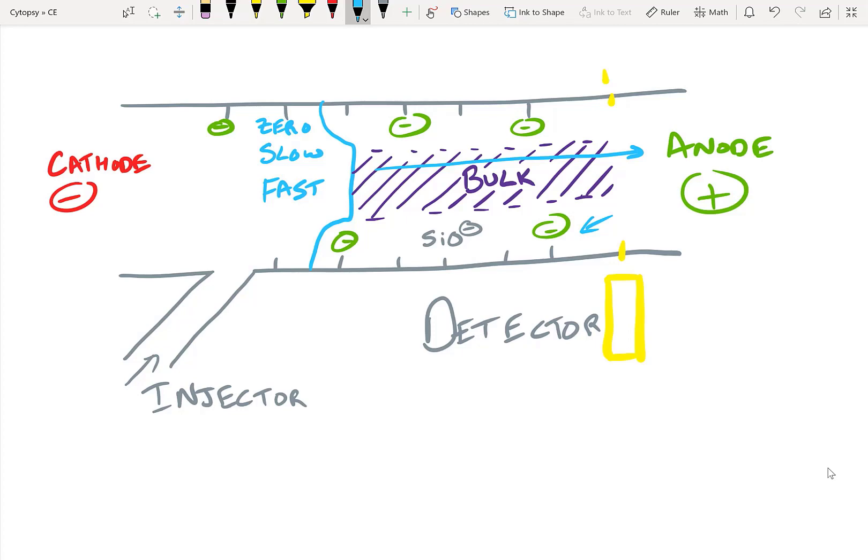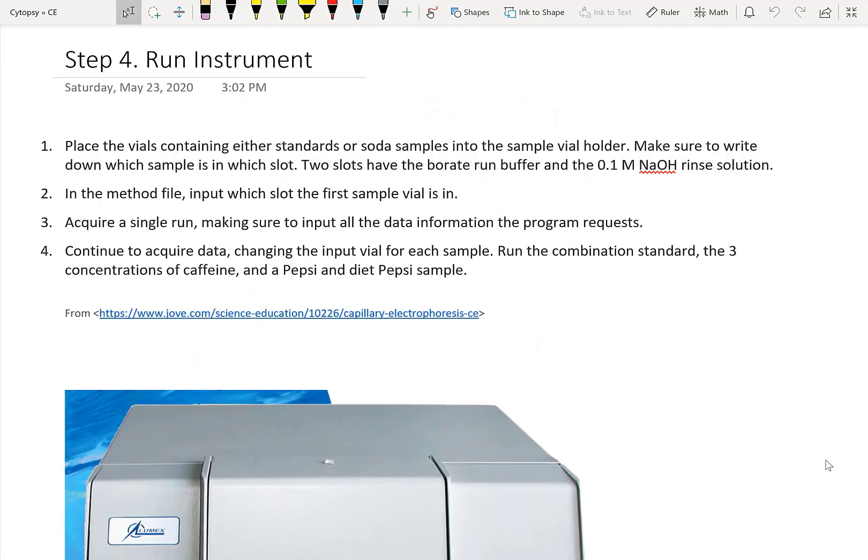And in this protocol, we're running normal polarity capillary electrophoresis. Here's the fourth step in the JOVE protocol. And you can see there's nothing much noteworthy here. You're going to have multiple sets of samples. So in this case, we're going to be running some soda samples - remember diet versus non-diet Pepsi. And also we're going to have borate run buffer and sodium hydroxide rinse solution as some of the inputs, because we're going to be rinsing our capillary in between each of the runs. That's about it.